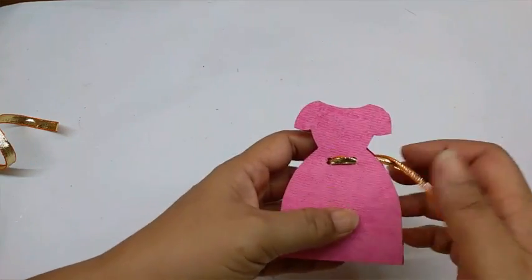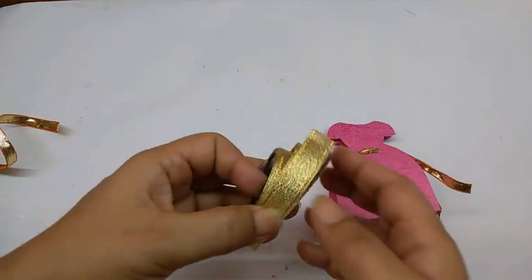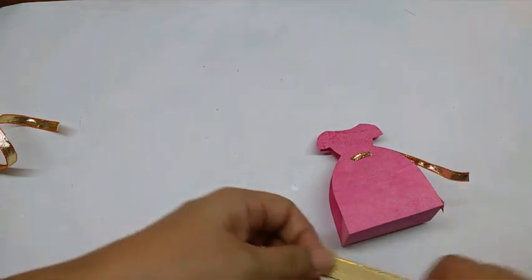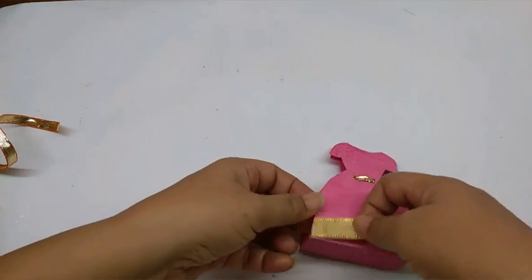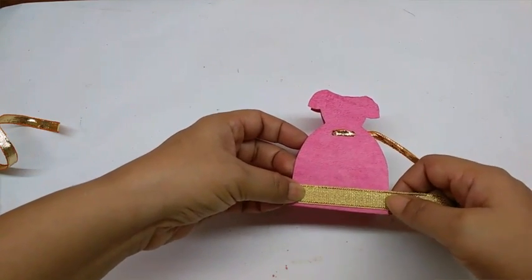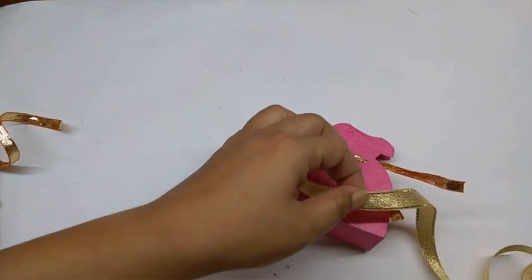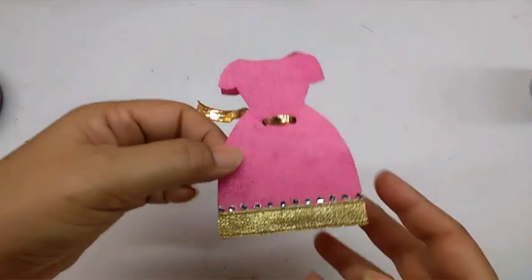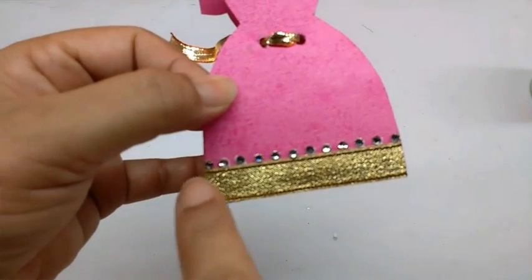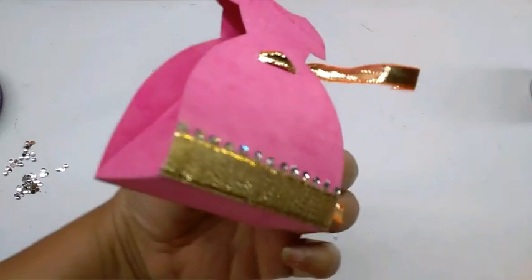Now we are going to decorate it. So first take the dull gold tape and measure it on the base and stick it. This is how it will look. I have also stuck the studs on it, the white studs. So I have done this on both sides.